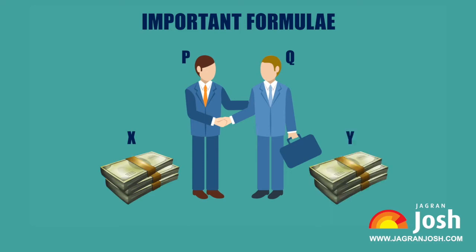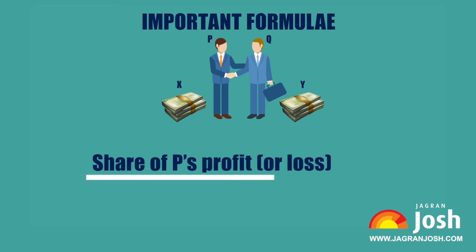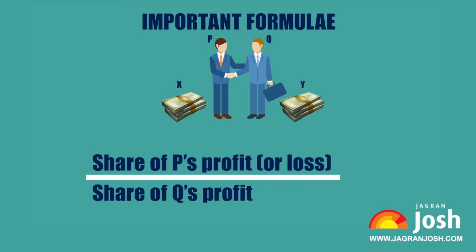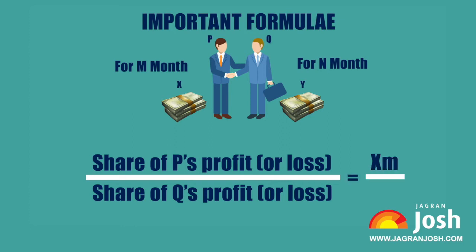Important formulae: Suppose two persons P and Q invest rupees X and rupees Y respectively for a year in a business. Then the share of P's profit or loss to Q's profit or loss is equal to X upon Y. If P invests rupees X for M months and Q invests rupees Y for N months, then the ratio of P's to Q's profit or loss is equal to X×M upon Y×N.